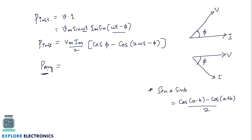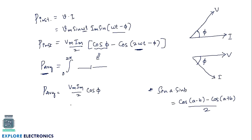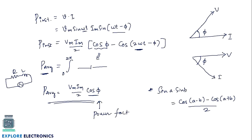We represent power as average power, which means we integrate over one complete full cycle. The cos(2ωt) term averages to zero, so P_average = (Vm × Im / 2) × cos(φ). This is the average power dissipated by the circuit when R and L are connected in series with an AC signal applied, where cos(φ) is the power factor of the circuit and φ is the power factor angle.